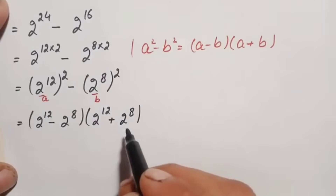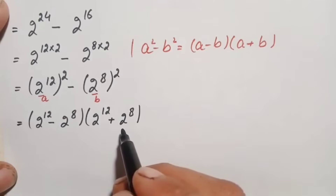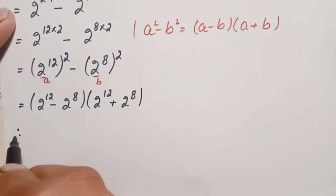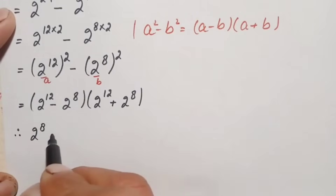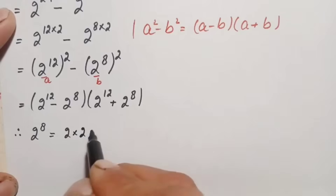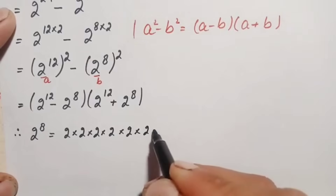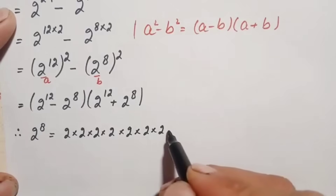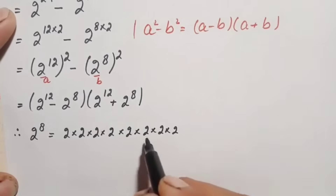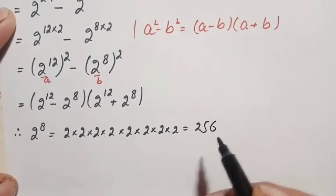Now we find the value of 2 raised to power 8 by multiplying 2 eight times: 2 times 2 is 4, 4 times 2 is 8, 8 times 2 is 16, 16 times 2 is 32, 32 times 2 is 64, 64 times 2 is 128, 128 times 2 is 256. So 2 raised to power 8 is 256.